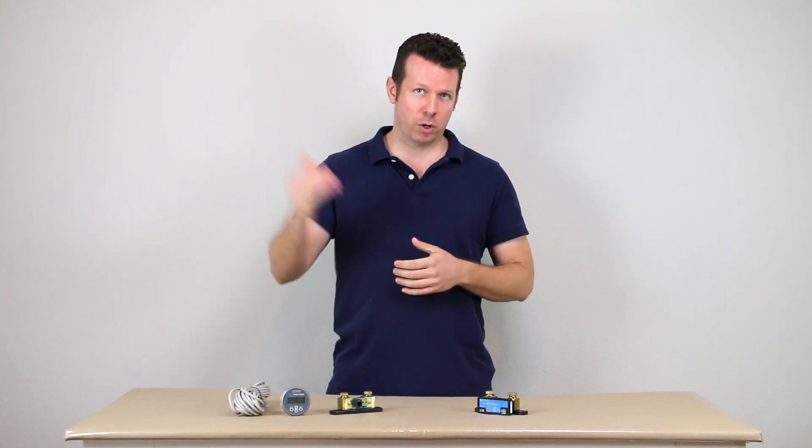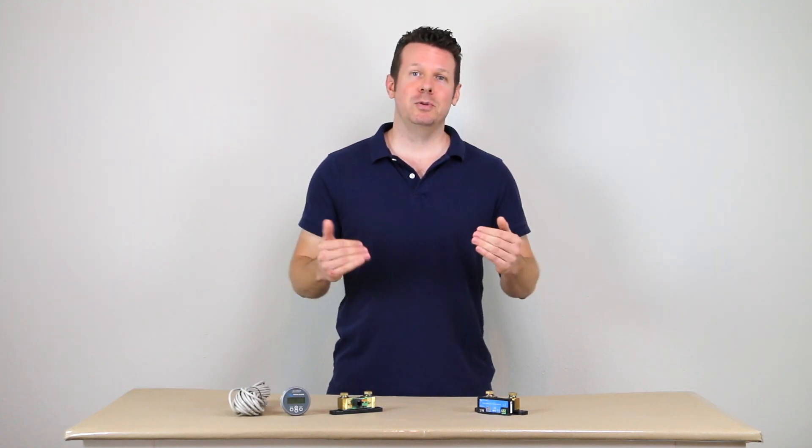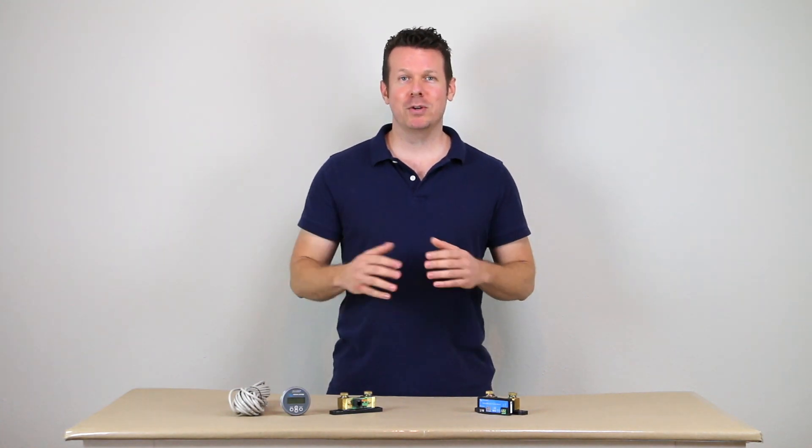And it has a feature called Time to Empty that's going to show you at your current rate of consumption how long you have before your batteries are empty. So that's really handy if you're running an energy hog device such as an electric stove or an air conditioner. It's going to tell you, you have 45 minutes until your batteries are empty.